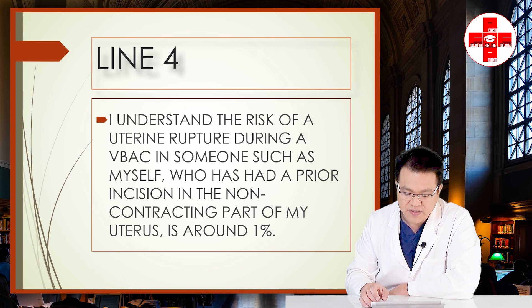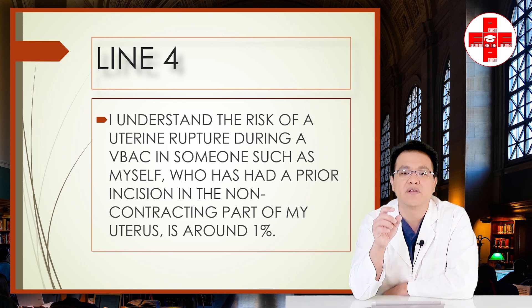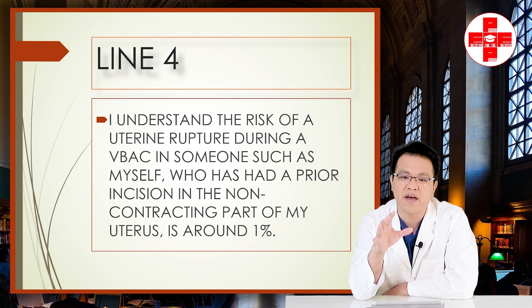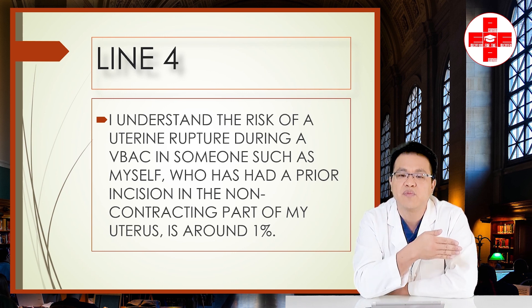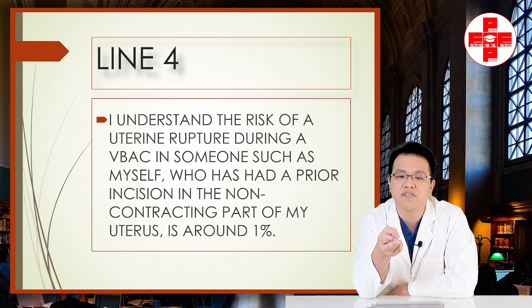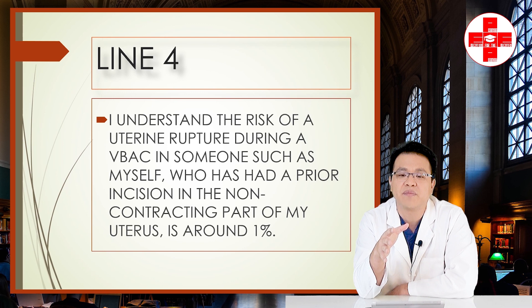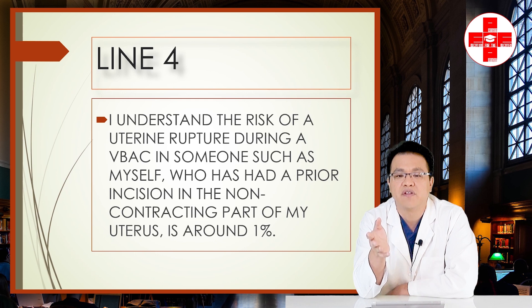Line four: 'I understand the risk of a uterine rupture during a VBAC, in someone who has had a prior incision in the non-contracting part of the uterus, is around 1%.' The risk varies based on your history. One documented low transverse C-section more than 18 months ago puts risk at about 0.5–1%. Two low transverse C-sections raises it to about 1–1.5%. Unknown scars suspected in the lower uterine segment and low vertical incisions also have a low uterine rupture rate.